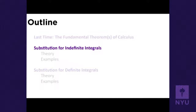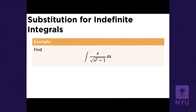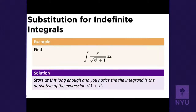I'll do this by example. We're going to look at the indefinite integral of x over the square root of x² + 1. One technique of anti-differentiation is the guess and check method. If you're lucky enough to guess, you'll notice that the integrand is the derivative of the expression √(1 + x²). Once you see that the proposed answer is √(1 + x²), it's not too hard to check.